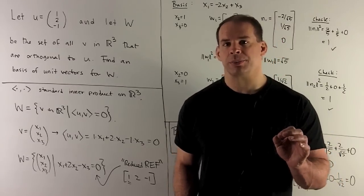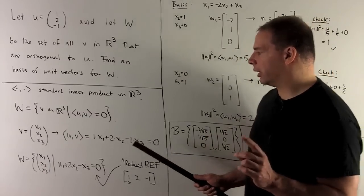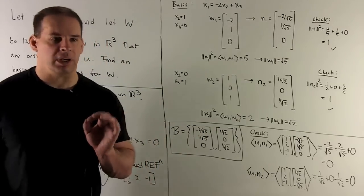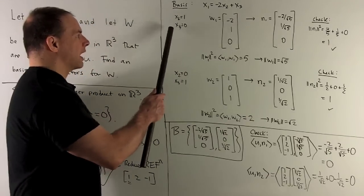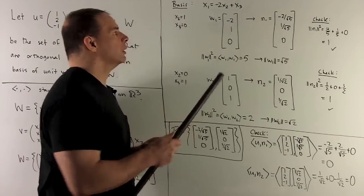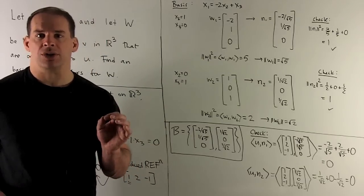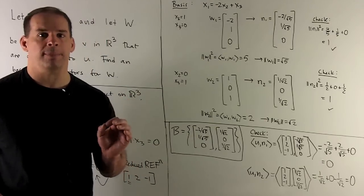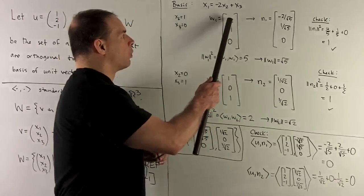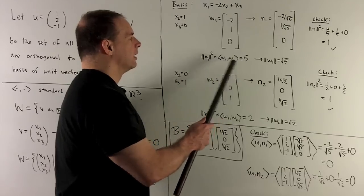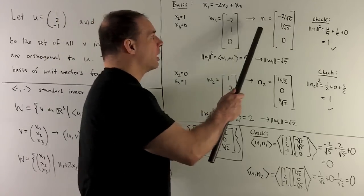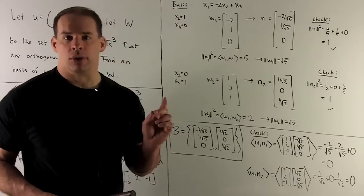To find the basis vectors, we let one independent variable equal one and the rest equal zero. First, let X2 = 1 and X3 = 0. That gives our first vector W1 = (-2, 1, 0). Since we want unit vectors, we find its length: the length squared is the inner product of W1 with itself, giving 4 + 1 + 0 = 5, so the length is √5. The unit vector N1 = (-2/√5, 1/√5, 0).